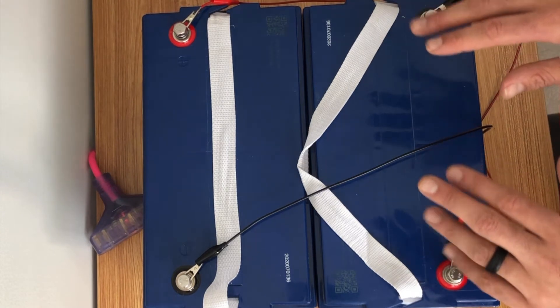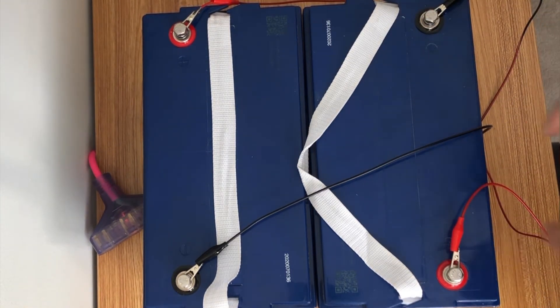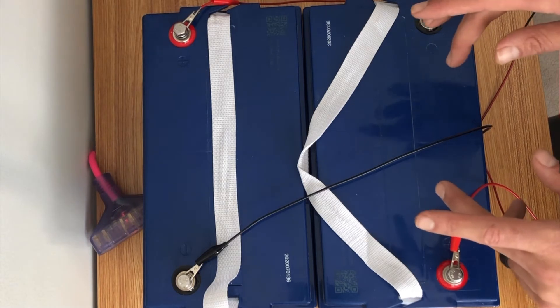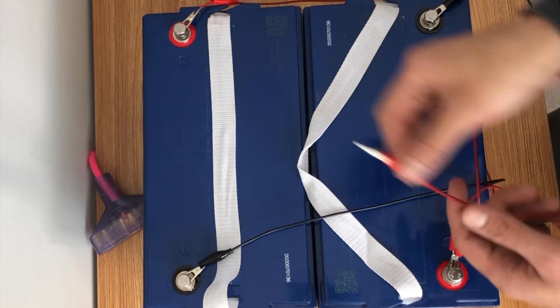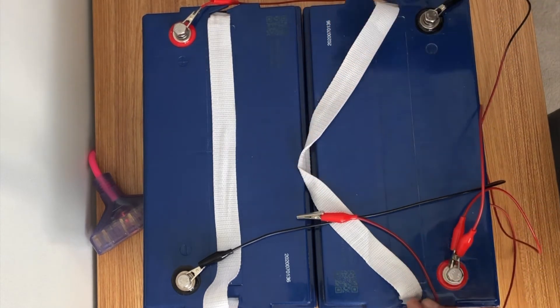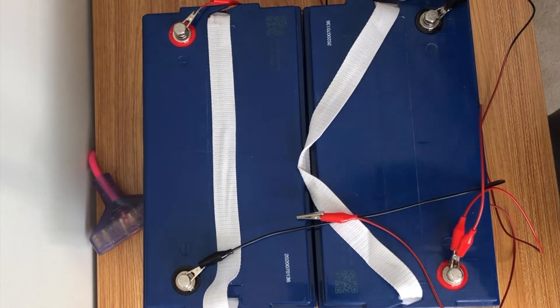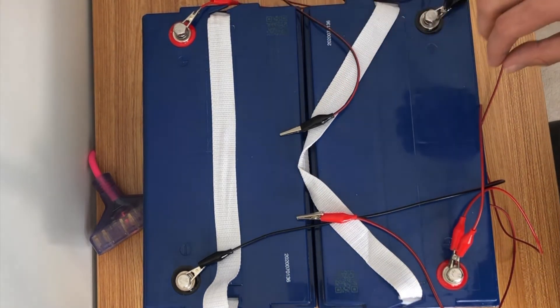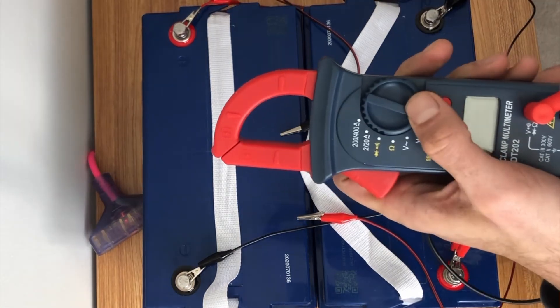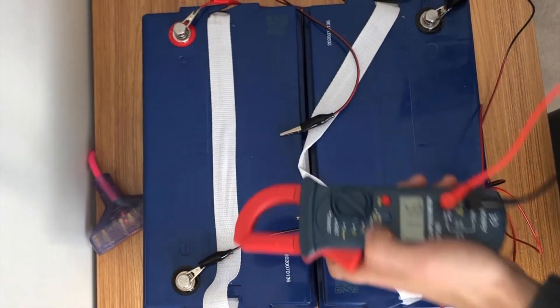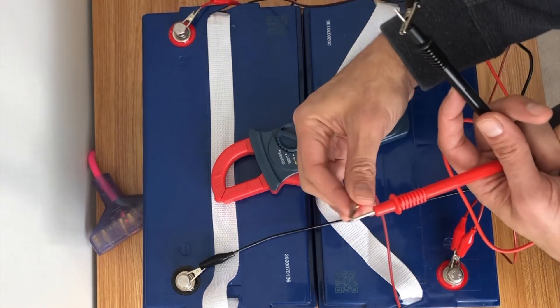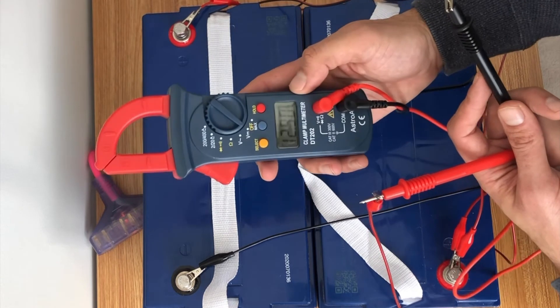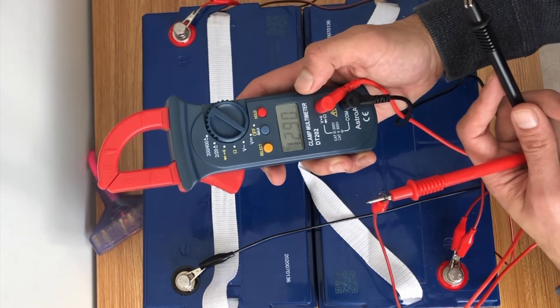Okay now we need to run a positive out and a negative out and when we run that on the voltmeter we should still see 12.9 volts.